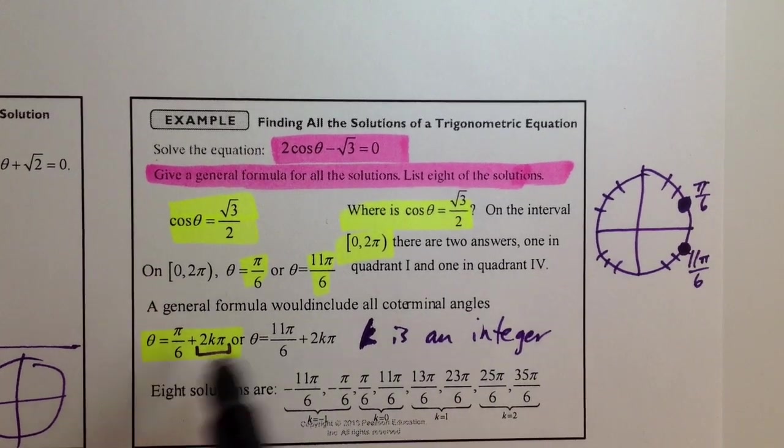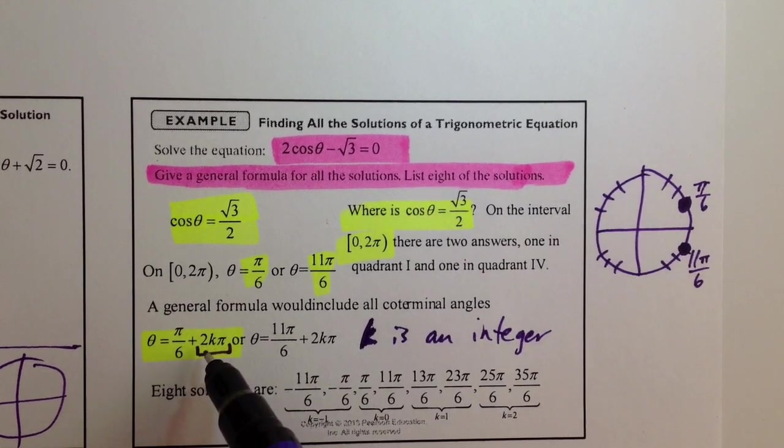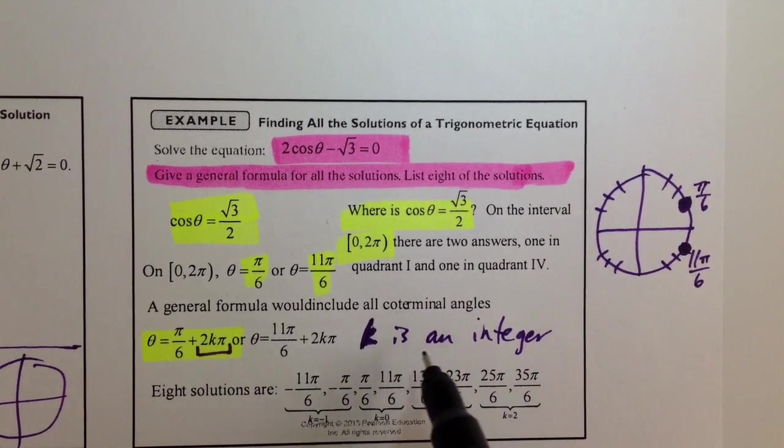So then, we have that angle, pi over 6 plus 2 pi, plus 2 pi, plus 2 pi, and that, when we keep adding the same thing, we stick a k in there, k going from negative infinity to positive infinity,